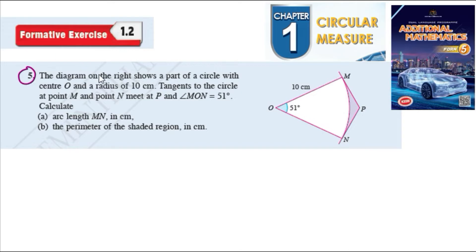So number five, the diagram on the right shows a part of a circle with center O and radius of 10 cm. Tangent to the circle at point M and point N meet at P. When it's saying about tangent, we know this one is 90 degrees, this one is 90 degrees. So meet at P and angle MON is 51 degrees.